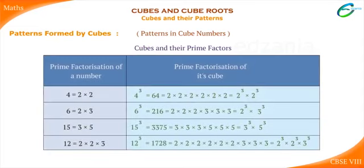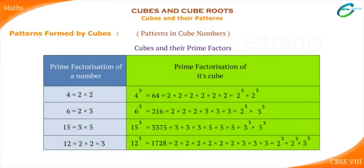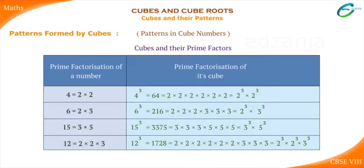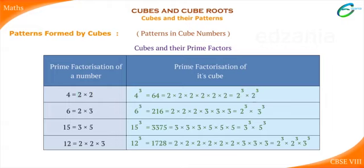You have learnt all about prime factors and prime factorization of numbers. Let us now see a relation between prime factors of a number and the prime factorization of its cube. Observe that each prime factor of a number appears 3 times in the prime factorization of its cube. For example, the prime factor of 4 appears 3 times in the prime factorization of 4 cube, and this holds for all examples given.